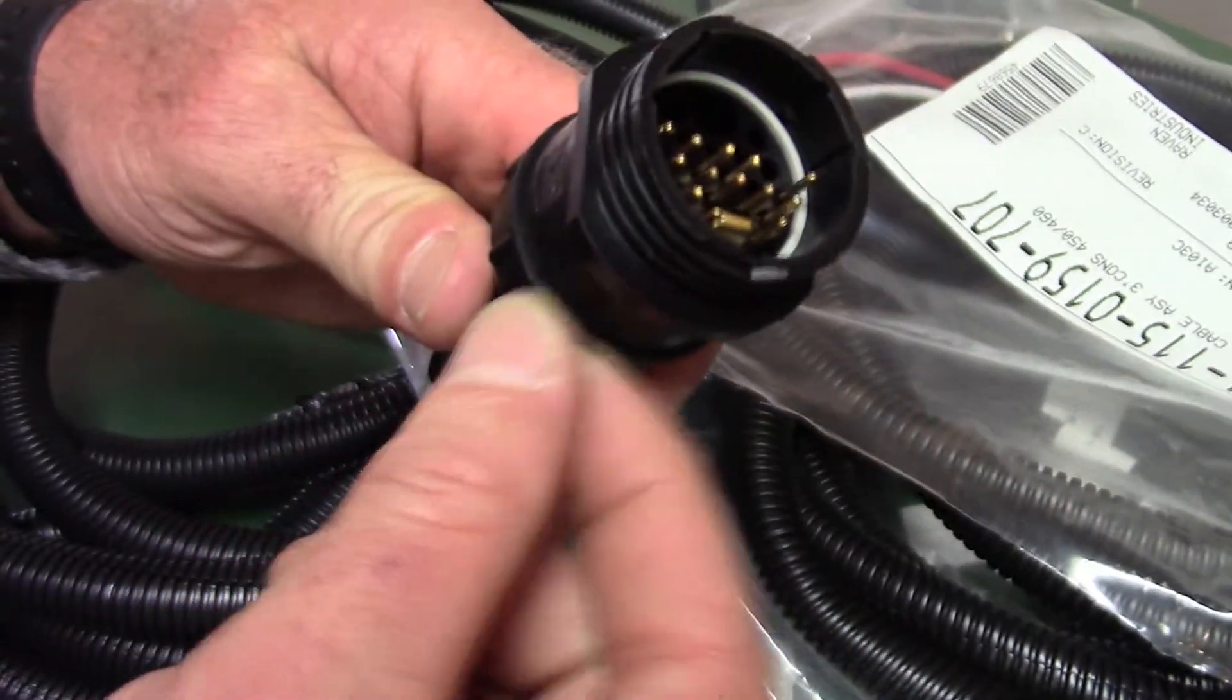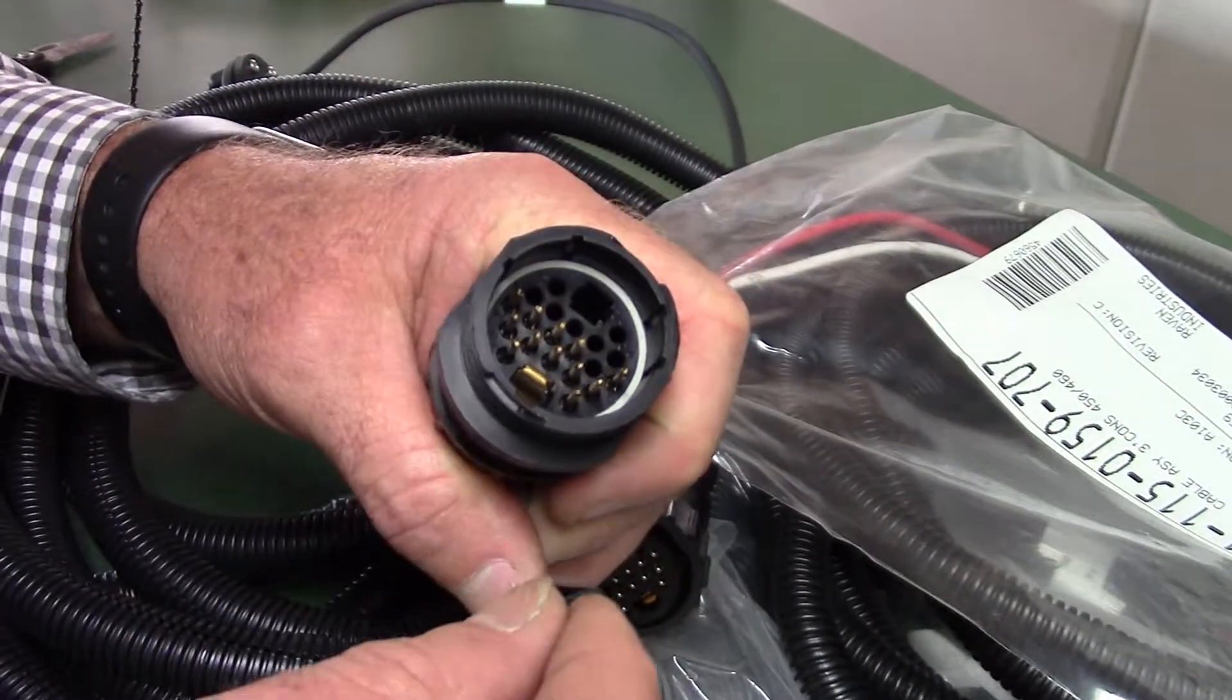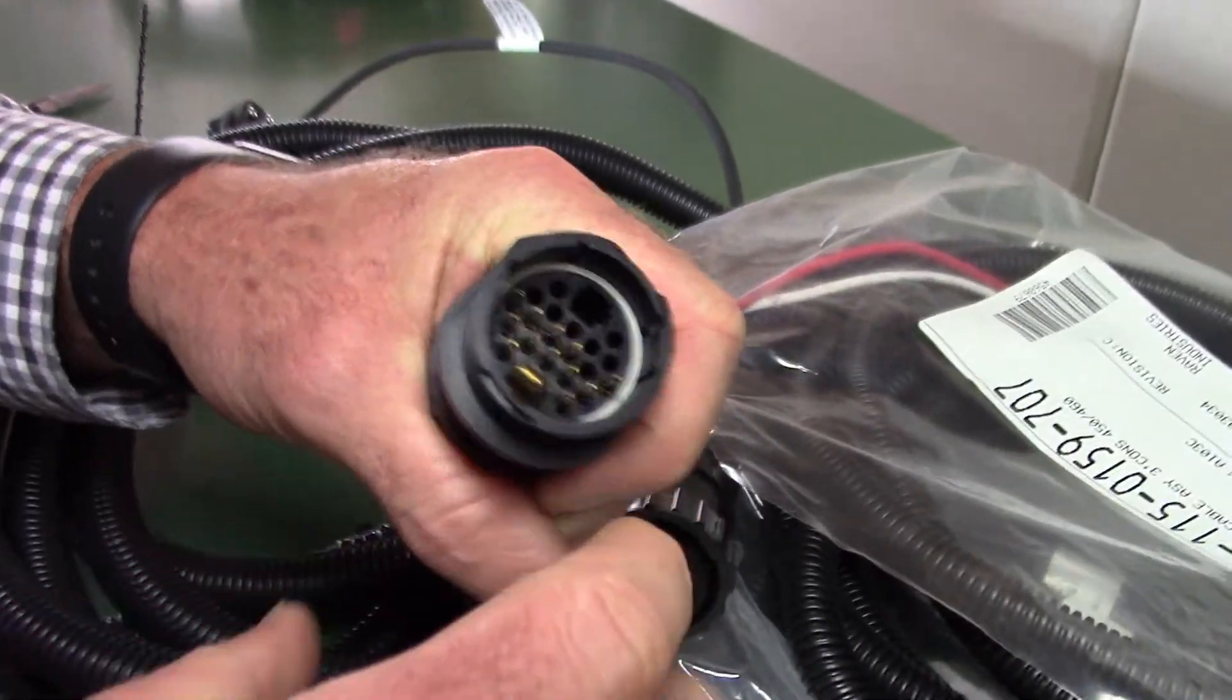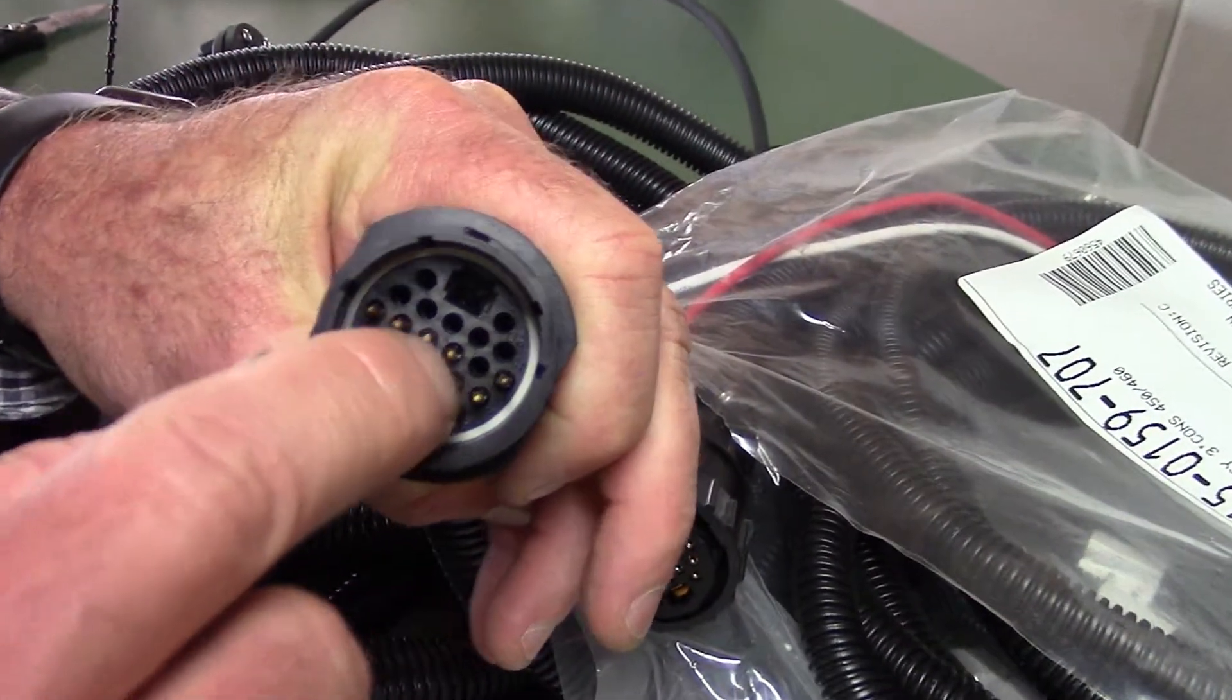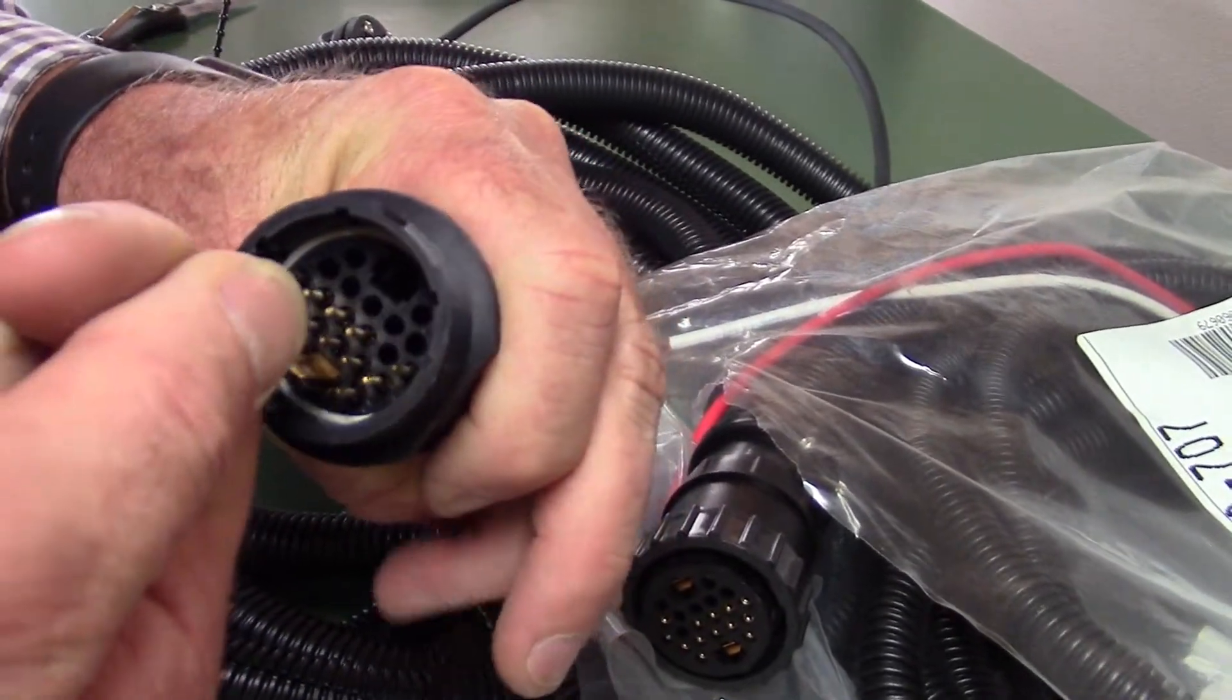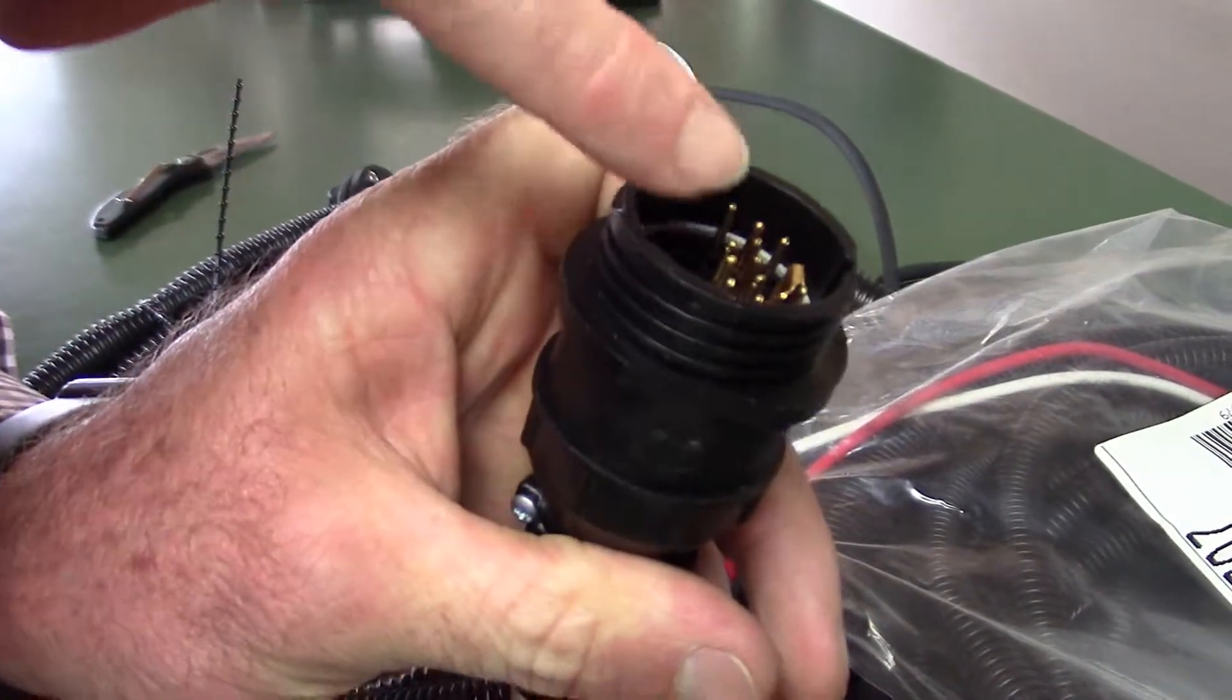There's a lock and sometimes something happens and it's possible that one of these pins gets pushed back. If that happens you just take a pair of needle nose pliers and just gently pull it out till it gets to the same level as all these other pins.